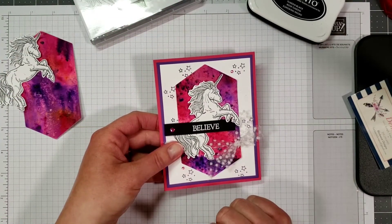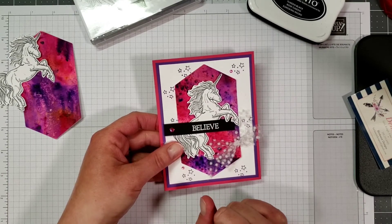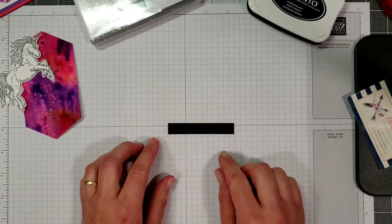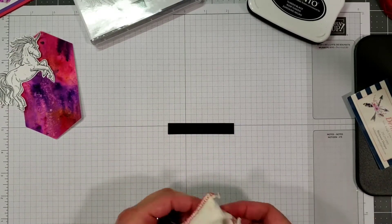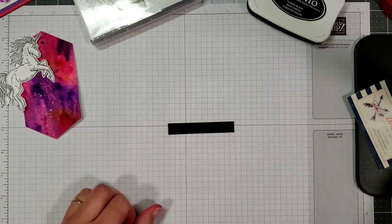I've just embossed it in white on a black piece of cardstock. The piece of cardstock is just half inch by three. I'm going to take our embossing buddy and I'm just going to give it a quick rub across there to get all the static off of it.